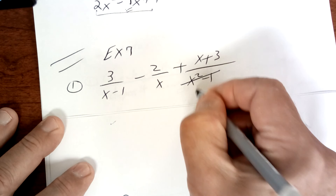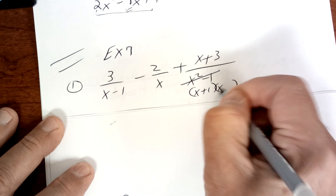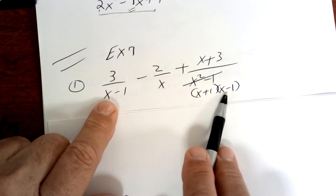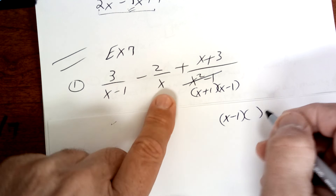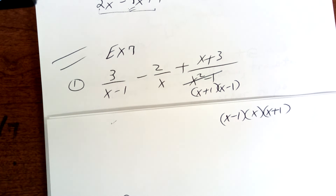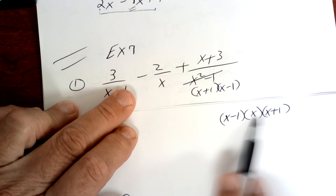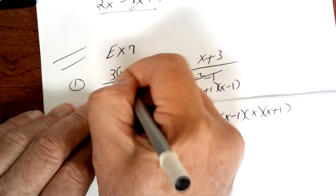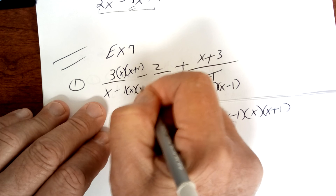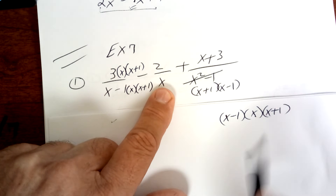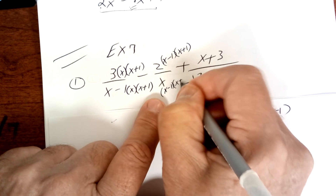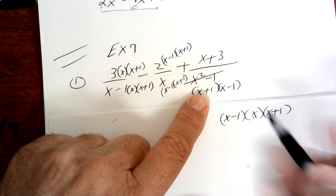This expression is already factored, this one is already factored, and this is the difference of two squares, so we replace it with (x + 1)(x − 1). The least common denominator is going to include one (x − 1), one x, and one (x + 1) — one of each. Here you have the (x − 1) but you're missing the x and the (x + 1), so you multiply top and bottom by x and (x + 1). Here you have the x but you're missing the (x − 1) and the (x + 1).